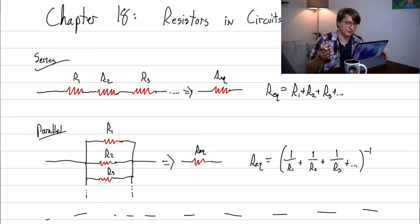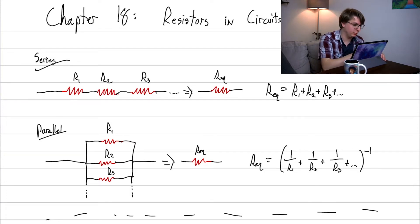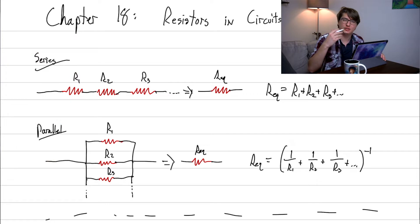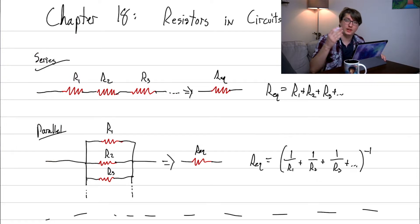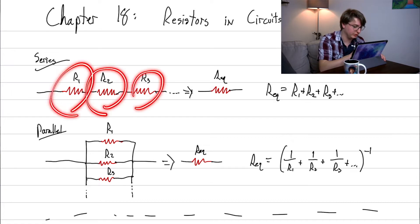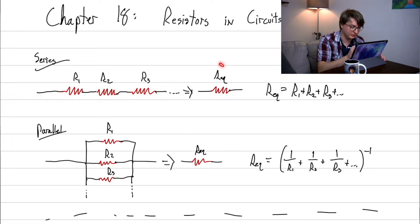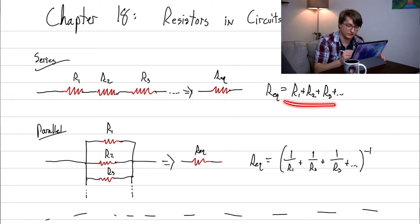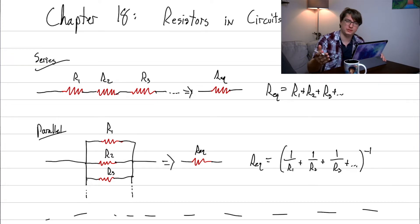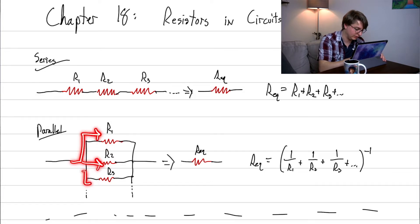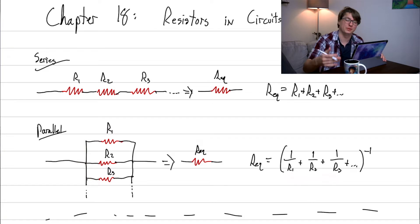Let's talk about combining resistors in circuits. We talked about series and parallel before, and it turns out the rules for combining resistors are exactly opposite to those for capacitors. If you have resistors in series, the current has to go through all of them, and to find the equivalent you simply add them. For resistors in parallel, we use the inverse rule.